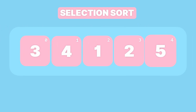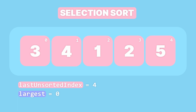Similar to bubble sort, initially the entire array is unsorted, so the last unsorted index is set to 4. We'll initialize a variable called 'largest' to 0, and whatever is at position 0 in the array will be considered the largest element based on our starting point. So when we start, we set 3 as the initial value for the largest element. And we'll start with the index i set to 1, and we'll use it to iterate through the unsorted partition and find the largest element.